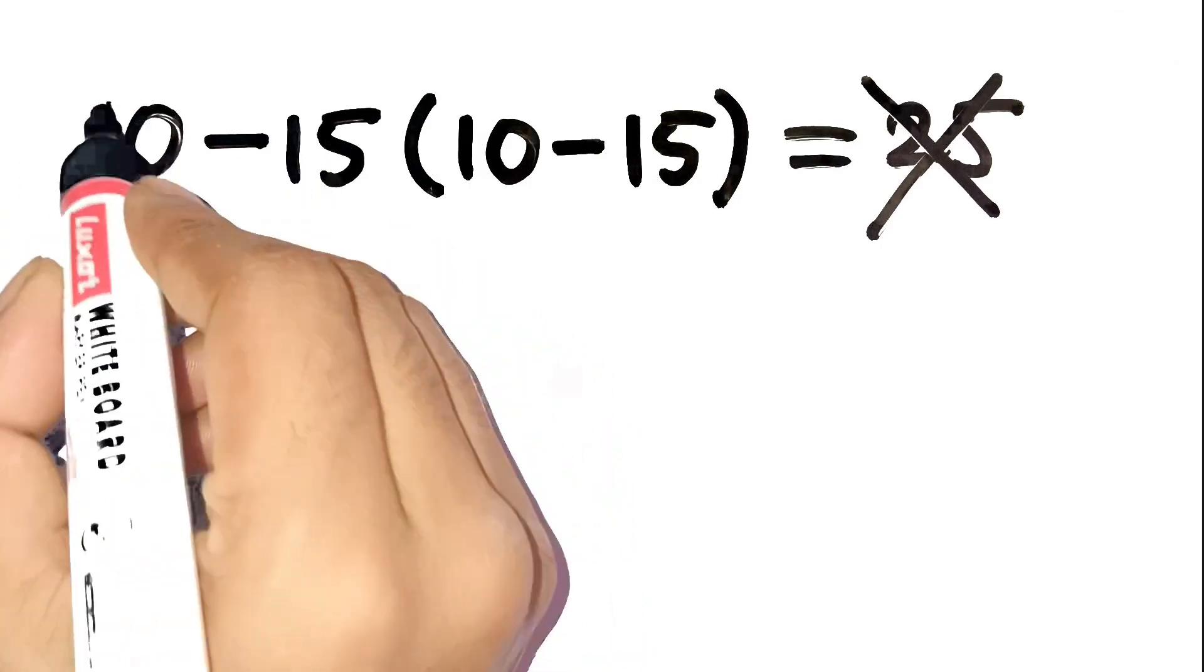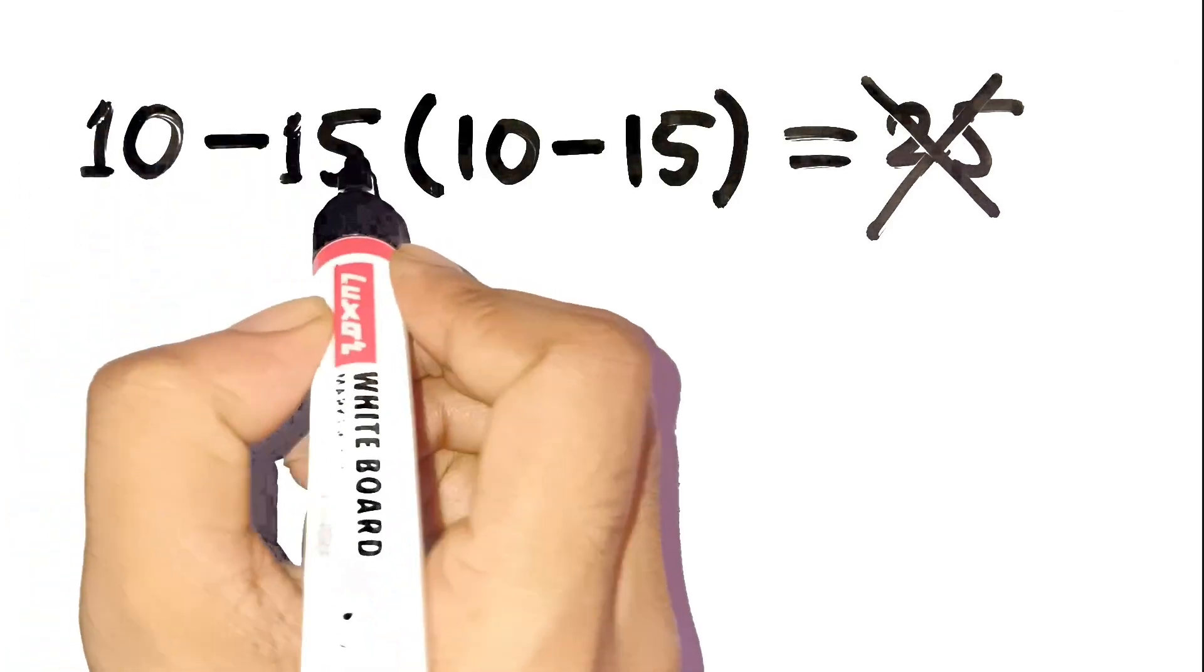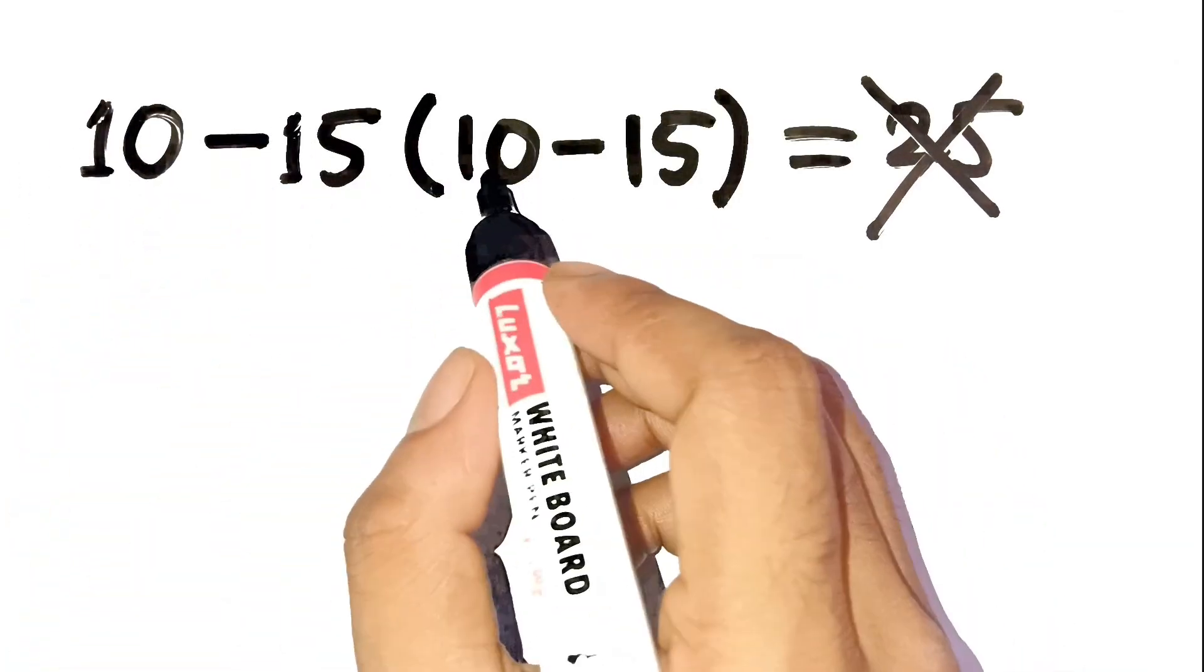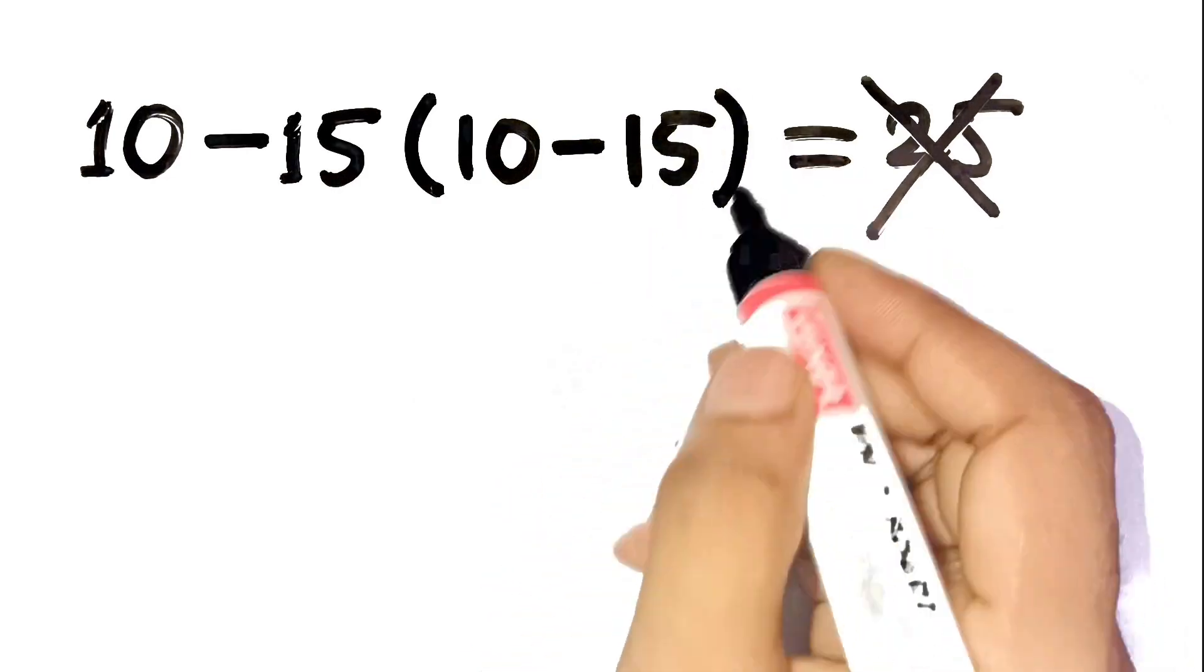All right, here's the problem. 10 minus 15 times open parentheses, 10 minus 15, close parentheses.